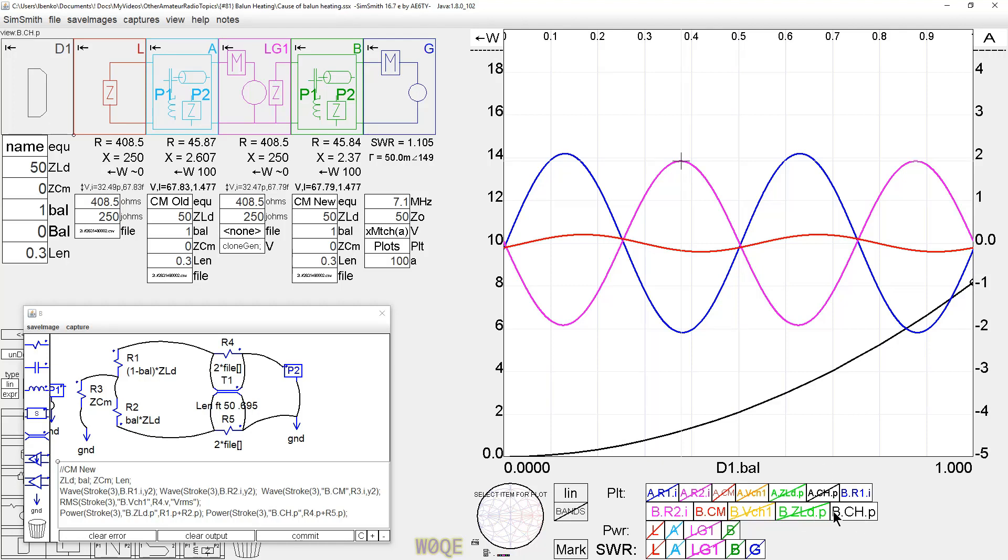And what we see is the choke power running from zero up to about eight watts. And we can also plot the load power, which won't show on this display because it's higher. It starts at 100 watts and goes down to about 90, 92 when this goes to eight. So the 92 plus the eight gives us 100 watts.